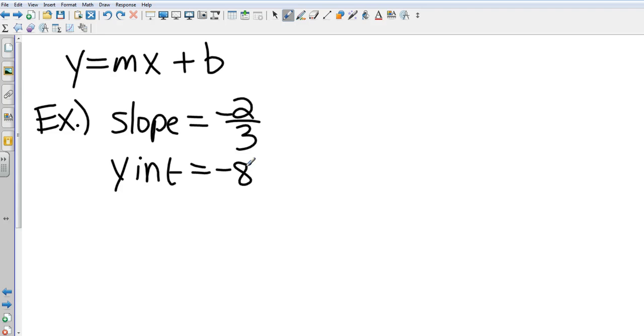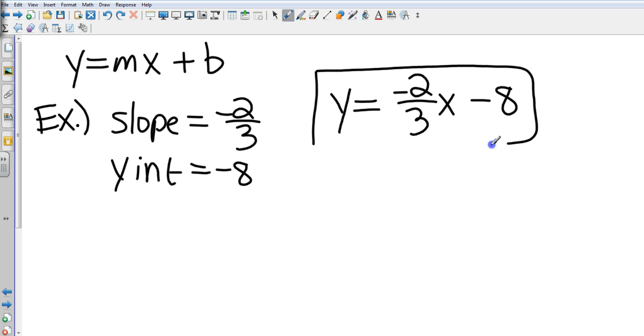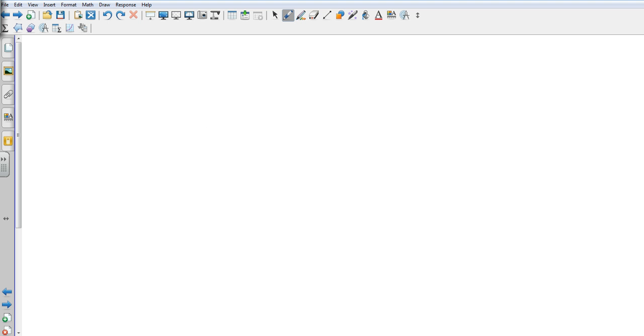I just substitute the slope in for m, so that's going to be y equals negative two-thirds x, and then I'm adding b which is negative eight. When I add negative eight, that's just subtraction, so my equation is y = -2/3x - 8.